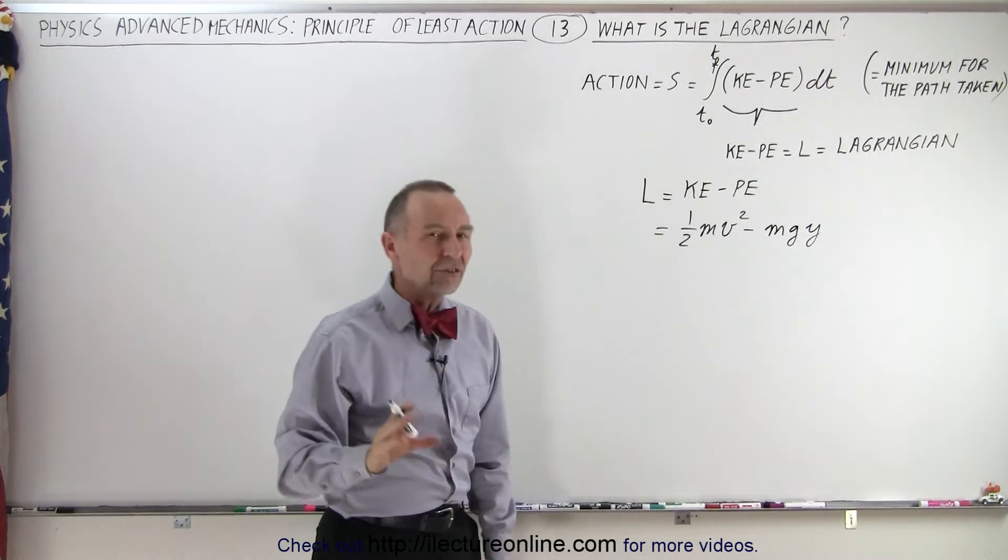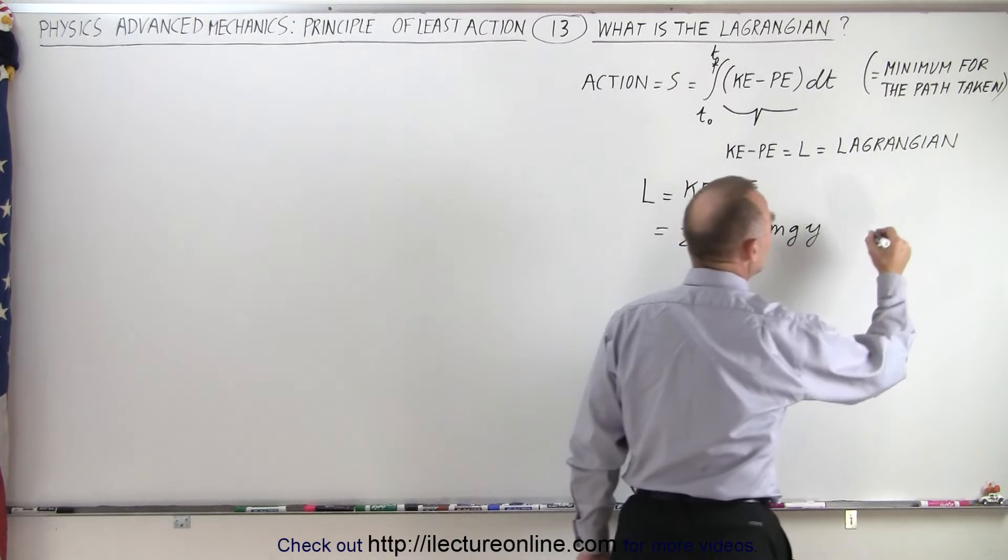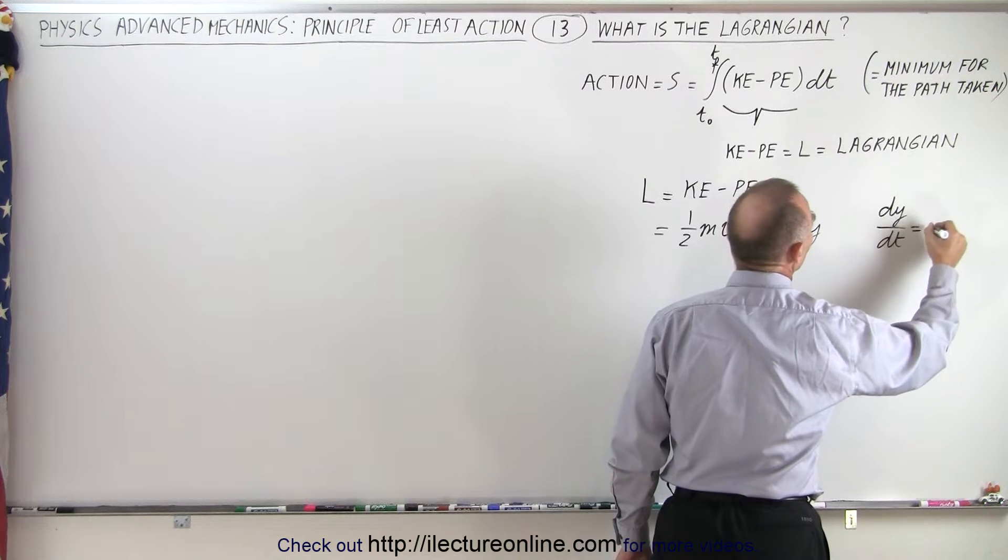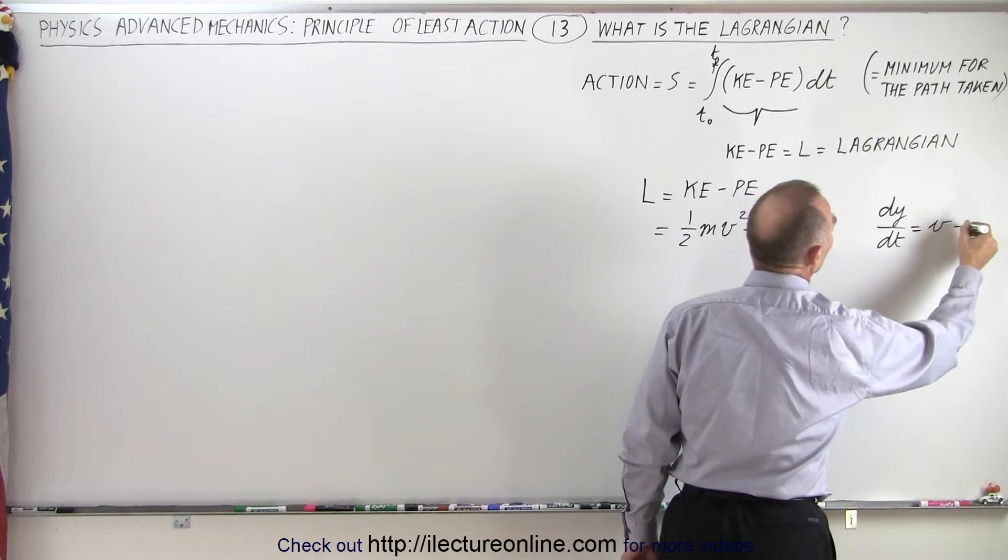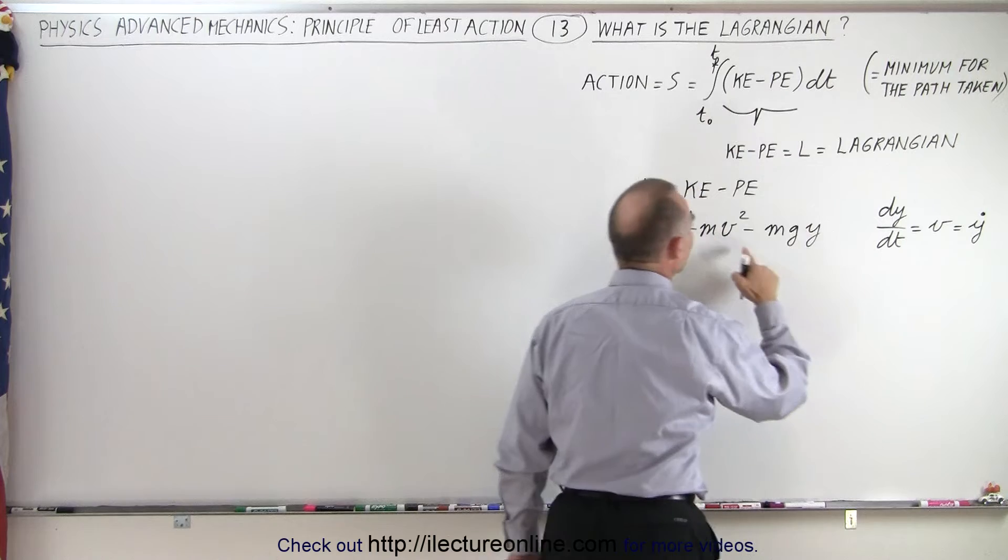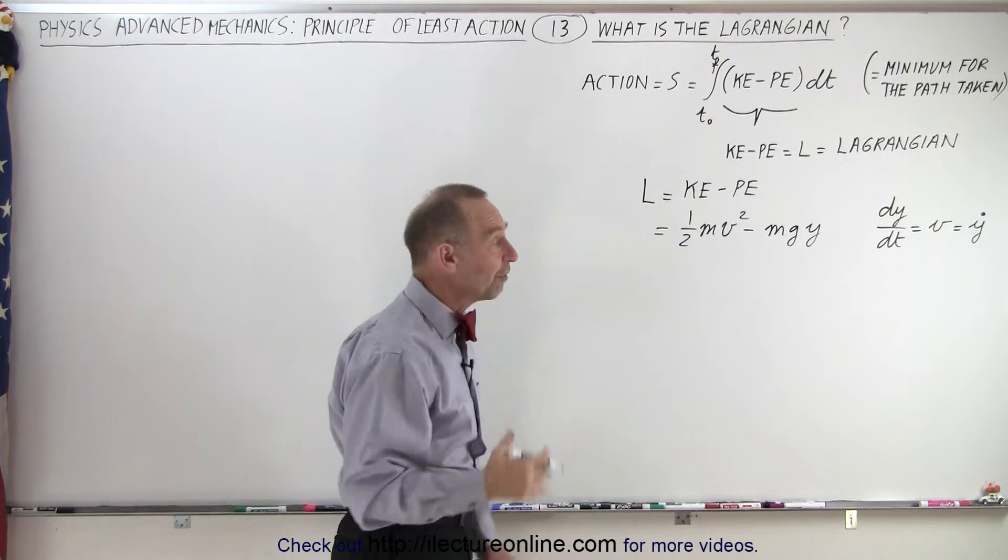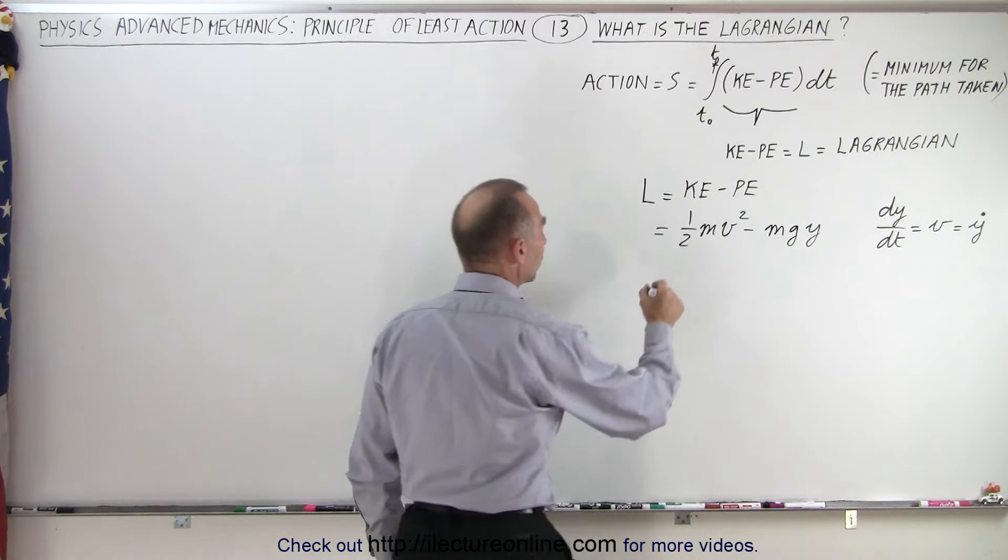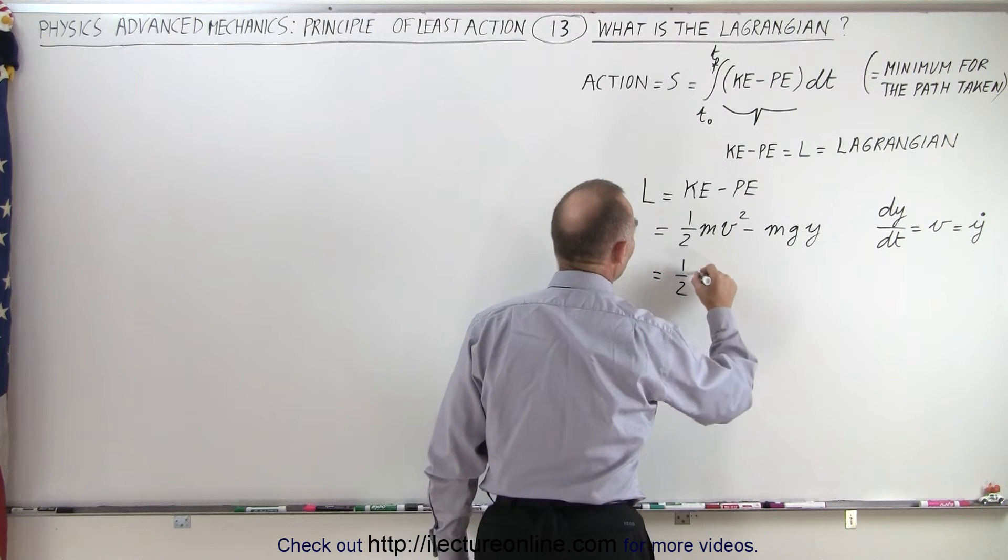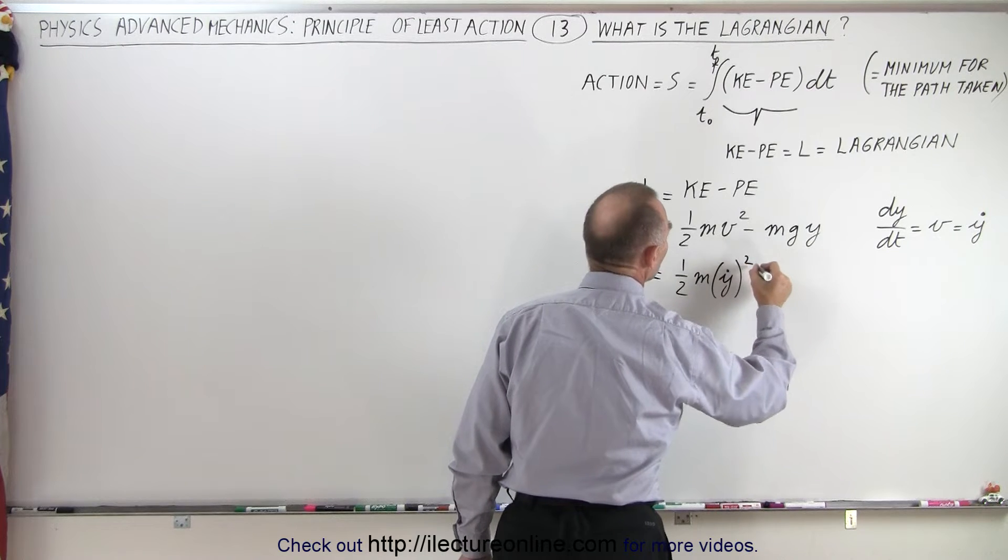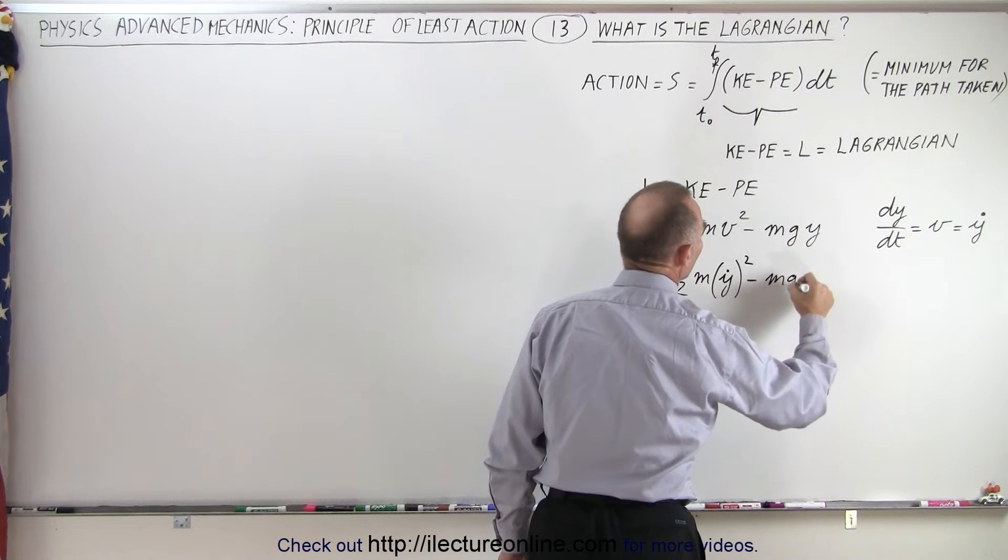And then we make a substitution. We know that dy dt is equal to the velocity, and so that can also be written as y dot. So instead of writing velocity, we can simply replace it by y dot, the derivative of y with respect to time. So this can be written as one-half m times the quantity y dot squared minus mgy.